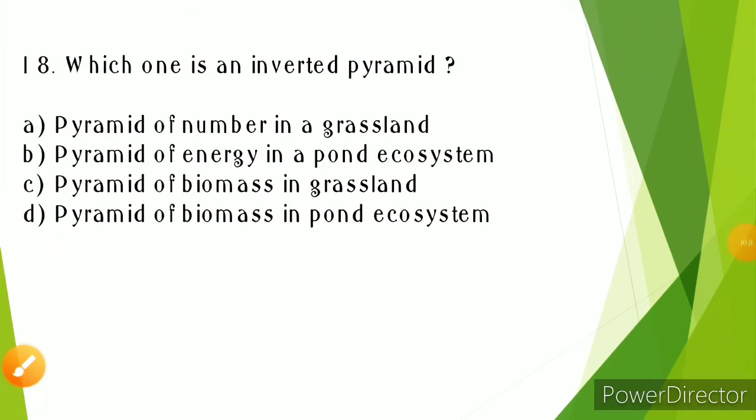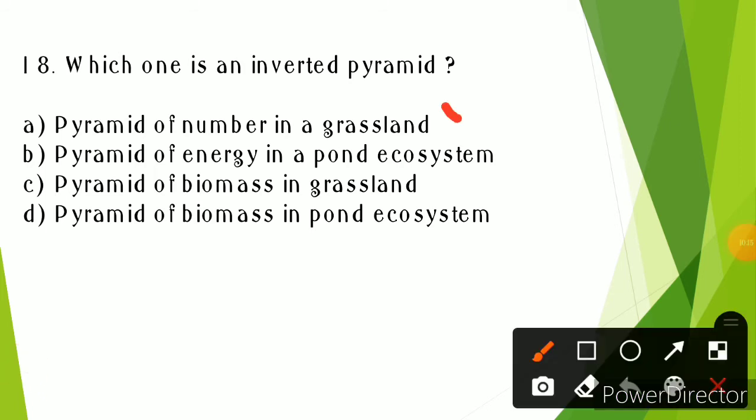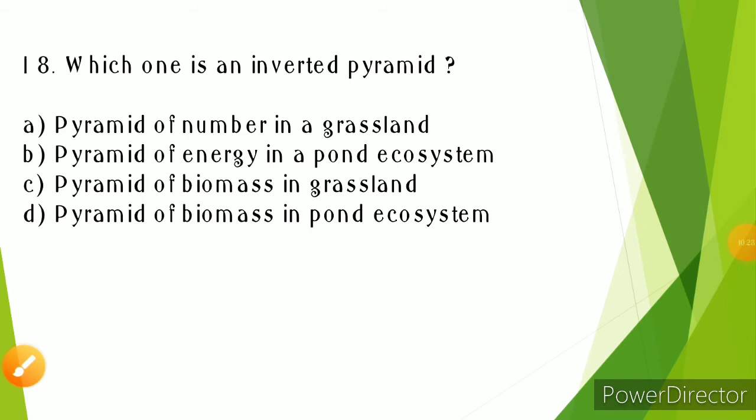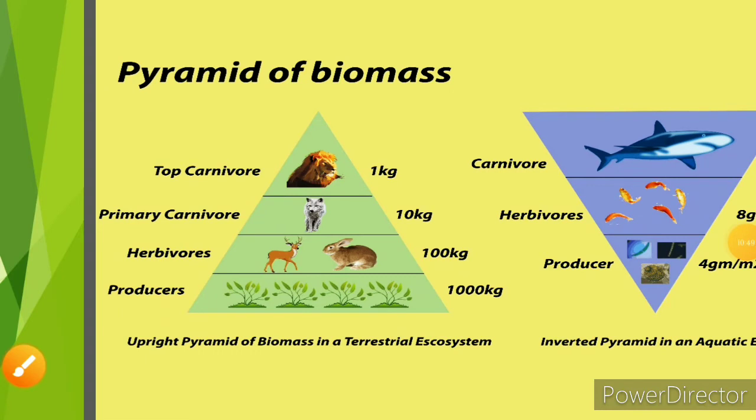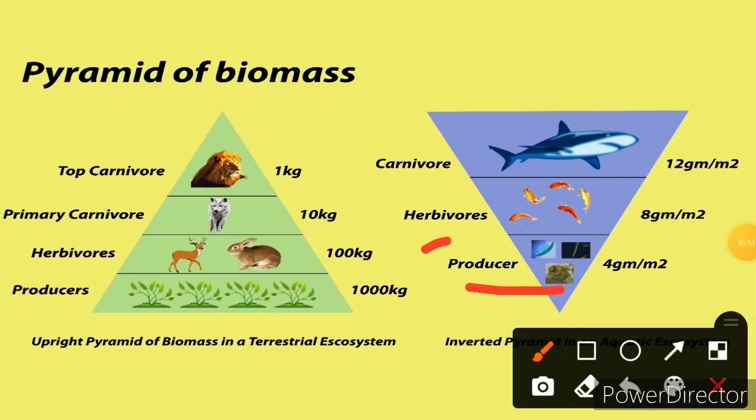Which one is an inverted pyramid? Pyramid of number in grassland is upright with producers at the bottom, then primary consumers, then secondary consumers. Pyramid of energy is always upright, so it is not inverted. Pyramid of biomass in grass system is upright. But pyramid of biomass in pond ecosystem is the correct answer because it is an aquatic ecosystem. The producer's biomass is less compared to herbivores and carnivores. In aquatic ecosystems, it is inverted. In terrestrial ecosystems, the biomass is more at the producer level, then primary consumers are less, then secondary consumers, then top consumers.